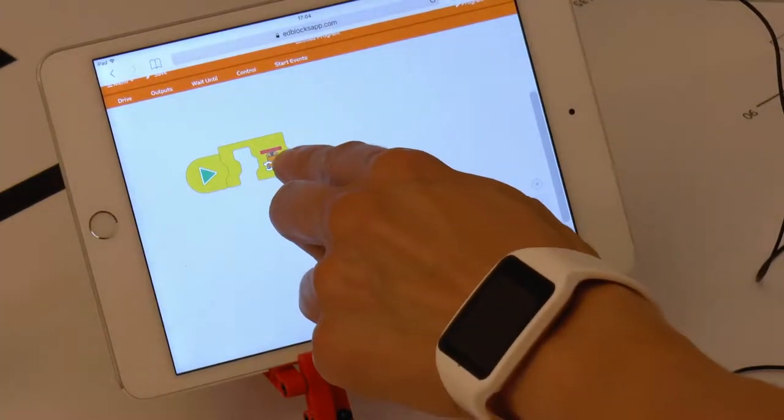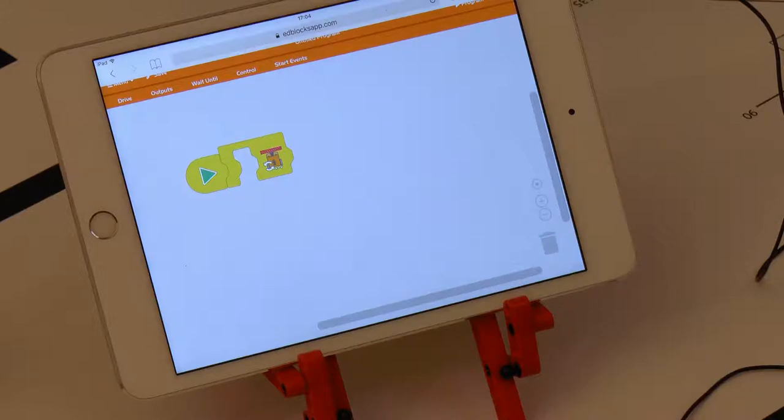Repeat until an obstacle is detected: The robot will repeat the program blocks inside of the loop until it sees an obstacle.